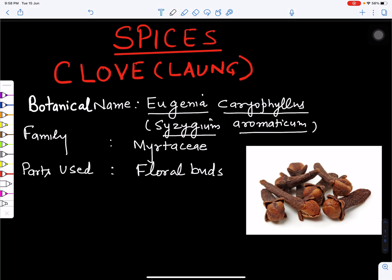In this video we will study about clove or long, its common name is long. This is also a spice. Now what is a spice or spices? These are dried seed, fruit, root, or bark of the tree.